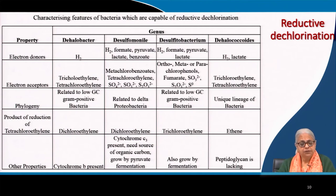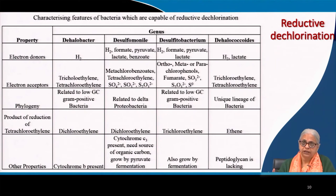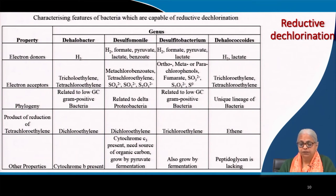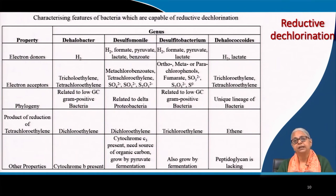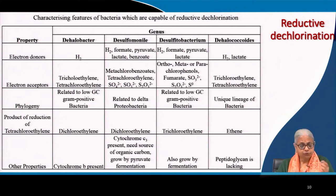There are several examples of reductive dechlorination with different combinations of electron donors and acceptors. For instance, hydrogen can be coupled with trichloroethylene, and other donors include formate, pyruvate, lactate, and benzoate in combination with different organic compounds. Specific species mediate specific couplings of electron donors and acceptors. The end products of the reduction of tetrachloroethylene include dichloroethylene, trichloroethylene, or all the way to ethene.